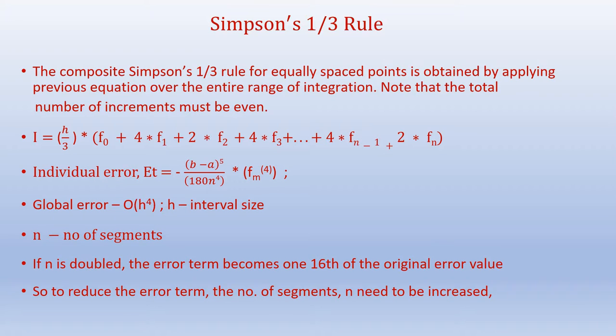The individual error E_d is represented as negative (b minus a)^5 divided by 180n^4 times f^(4), where f^(4) is the fourth derivative of the function at various points, as we have seen before under the trapezoidal rule. The global error is of the order of h^4, where h represents the interval size. In the equation, n represents the number of segments. If n is doubled, the error term becomes 1/16th of the original error value. This is an improvement when compared with the trapezoidal rule. To reduce the error term, the number of segments n need to be increased.